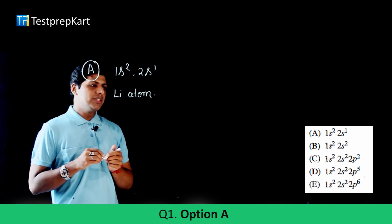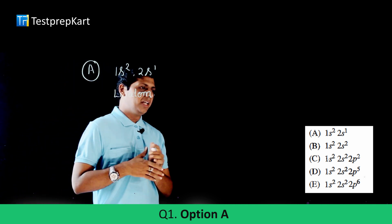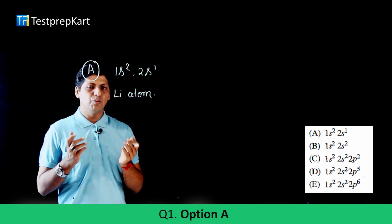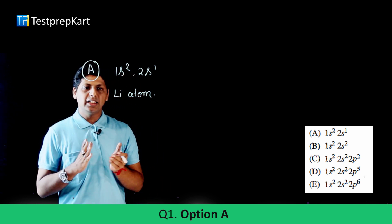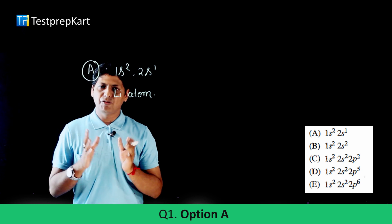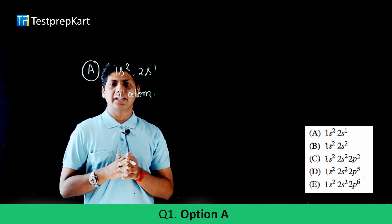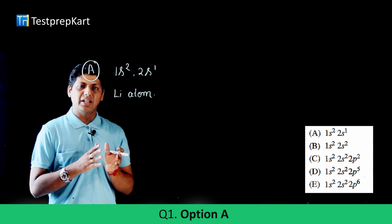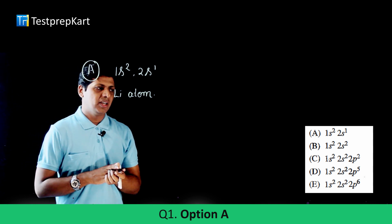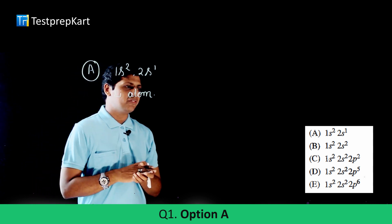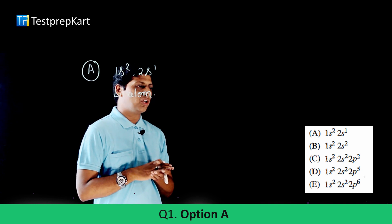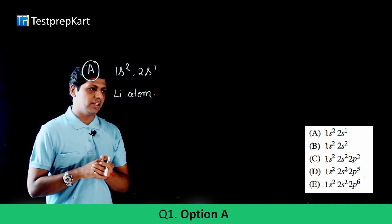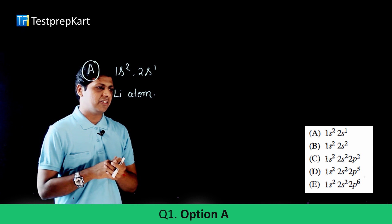Question 2 asks for the configuration of the element whose atoms are most likely to form four covalent bonds. Four covalent bonds form only when four valence electrons are present in the outermost shell. In option B, 1s²2s², only two electrons are in the valence shell.